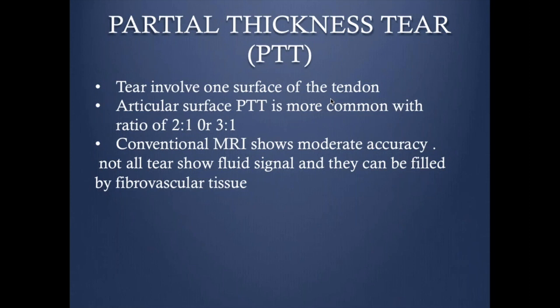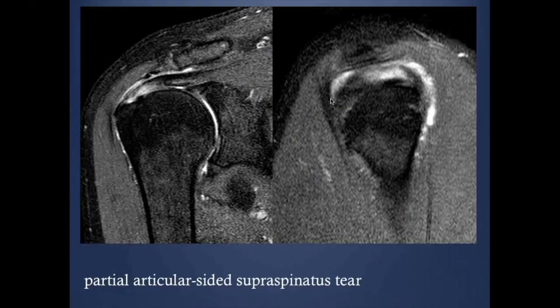Nevertheless, in our practice, for most rotator cuff disease we perform conventional shoulder MRI initially. Some institutions may consider arthrogram for articular surface partial thickness tear. As you see here, there is a fluid signal intensity involving the articular surface of the distal supraspinatus tendon, with the bursal surface still intact — an example of a partial thickness tear at the supraspinatus.